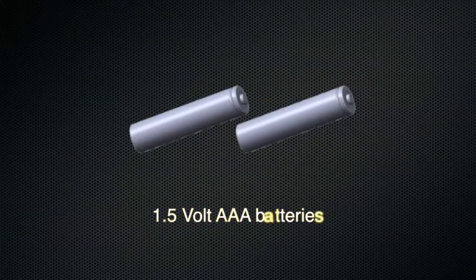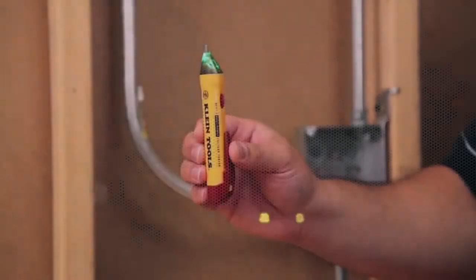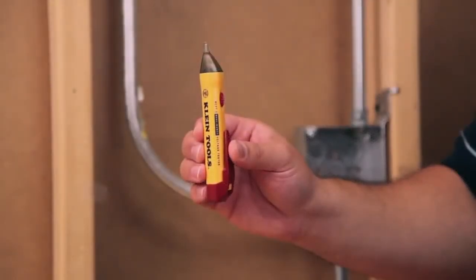The NCBT2 uses standard 1.5-volt AAA batteries and is equipped with an auto power-off feature to conserve battery life.